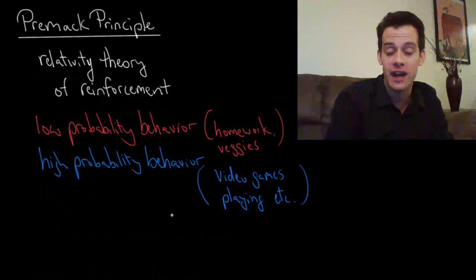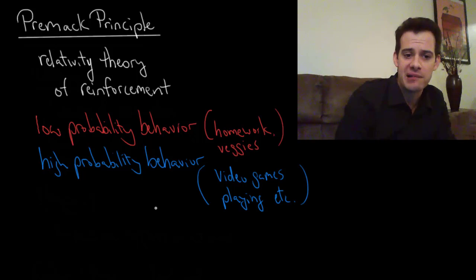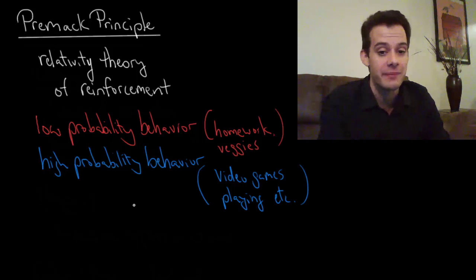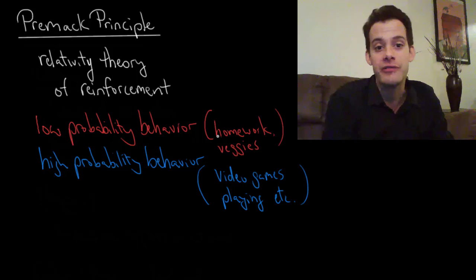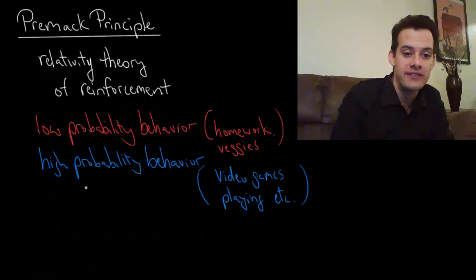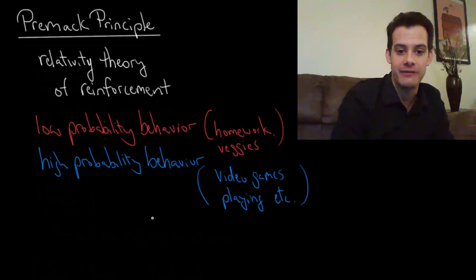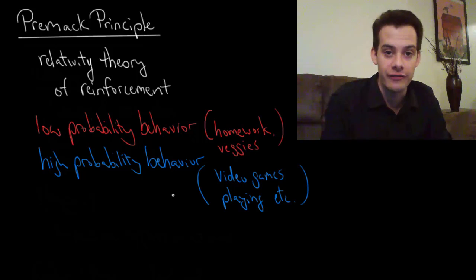They're sort of naturally desirable. And so the idea of the Premack Principle is that because these two behaviors have different levels of reinforcement sort of inherent to them, you can use one to reinforce the other. And your parents probably did this. They probably said something like, you can play video games after you finish your homework. So now you're using this high probability behavior as the reward for performing the low probability behavior. Or you can eat ice cream after you finish eating all your vegetables.